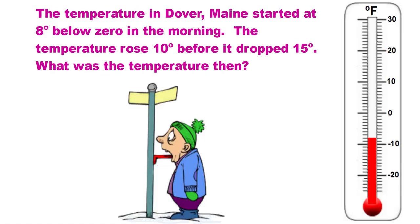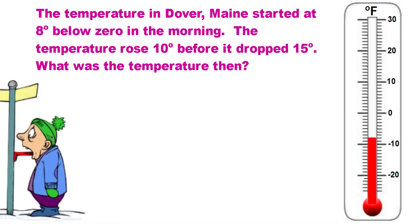The temperature in Dover, Maine started at 8 degrees below zero in the morning. The temperature rose 10 degrees before it dropped 15 degrees. What was the temperature then? Pause your video and solve it. I'm going to underline the numbers that are important. The temperature started at 8 degrees below zero — the 'below zero' tells you it's a negative number. The temperature rose 10 degrees — if something rises it goes into the air, so that's positive. Before it dropped 15 degrees — so that's negative.